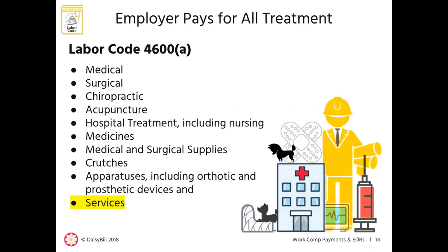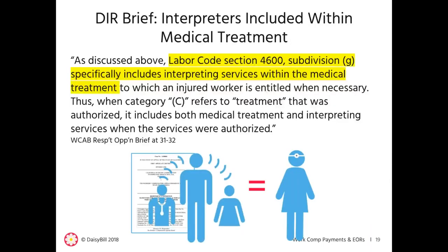This important labor code lists the medical care an employer is obligated to pay for when an employee is injured at work, including any necessary related services. Per a recent lawsuit, the Department of Industrial Relations filed a brief stating that Labor Code 4600 specifically includes interpreting services within the medical treatment. According to the DIR, an employer is obligated to pay for interpreting services when the interpreter provides the service during medical treatment.